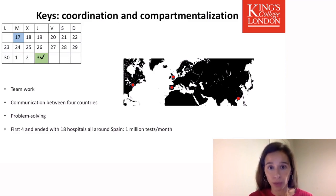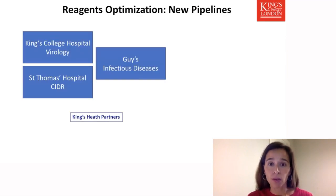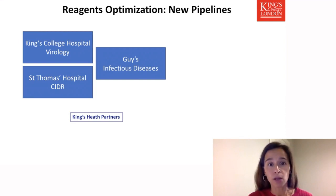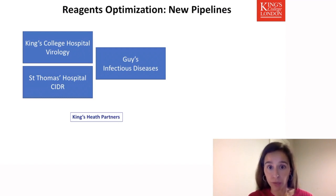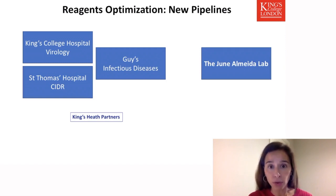This results in around one million extra tests per month. With regards to new pipelines, we have been developing these at King's Health Partners — an academic health science centre encompassing St. Thomas' Hospital, King's College Hospital, and Guy's Hospital. What we did was create a new lab called the June Almeida Lab, in honour of the first virologist who discovered coronavirus, who was actually employed at St. Thomas' Hospital.